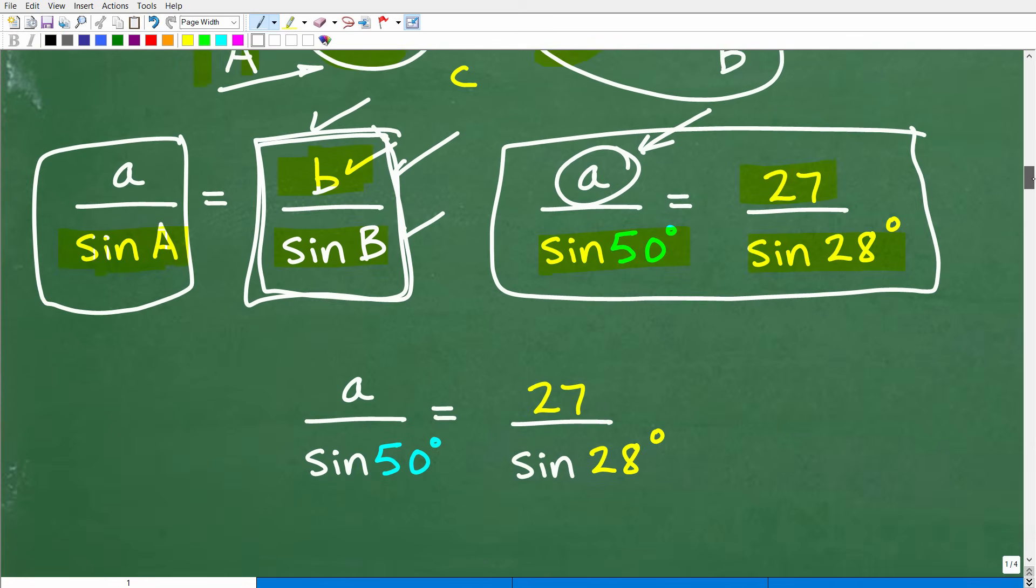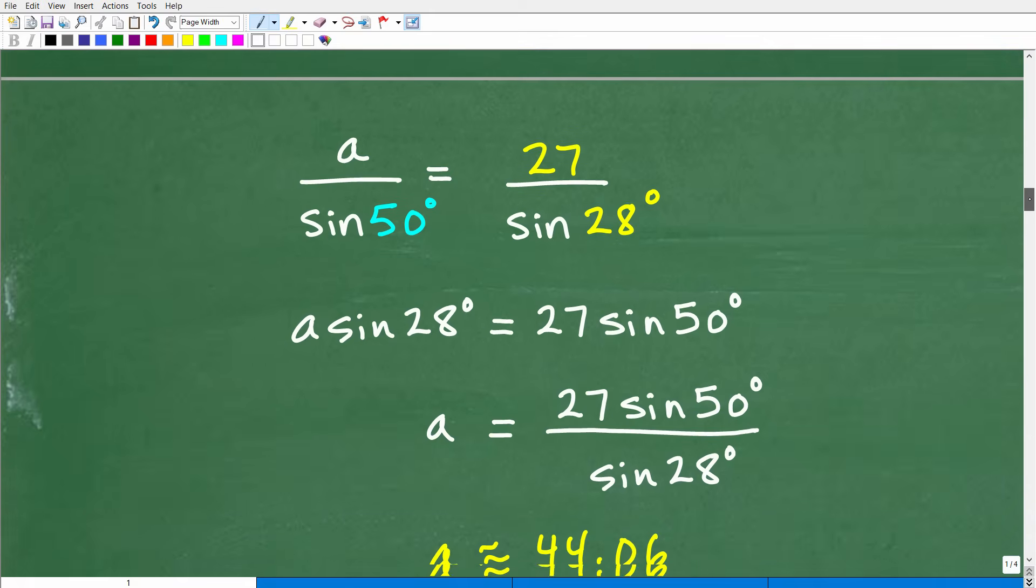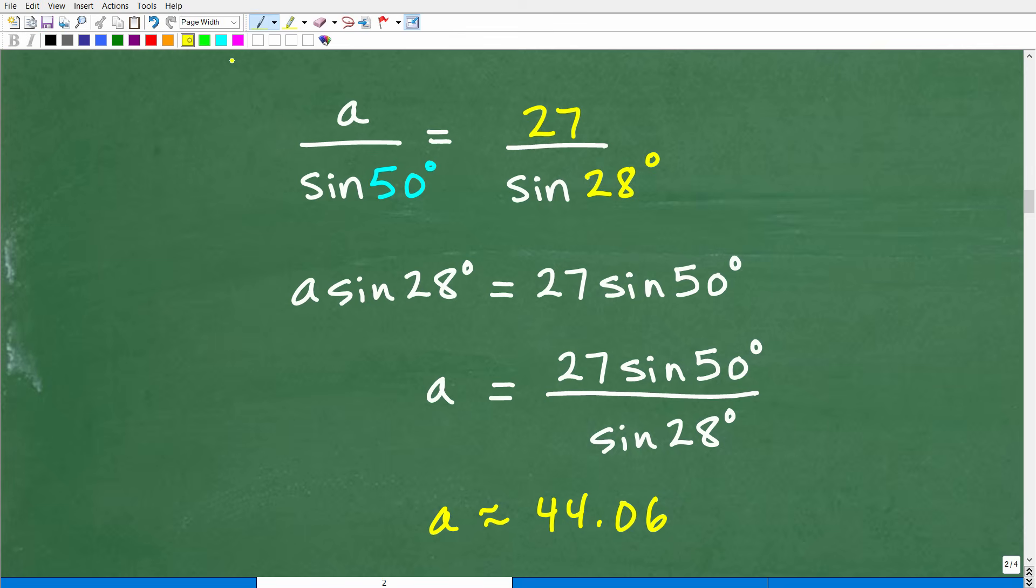So let's go ahead and just use some basic algebra to solve for a. And how are we going to do that? We're simply going to use the cross product. Remember, this is a proportion. So we can simply cross multiply. If you don't understand proportions well and you're at this level of math, then you definitely need to do some review. But basically, to solve for a, I can simply cross multiply. So it's going to be a times sine of 28 degrees. And then 27 times sine of 50 degrees.